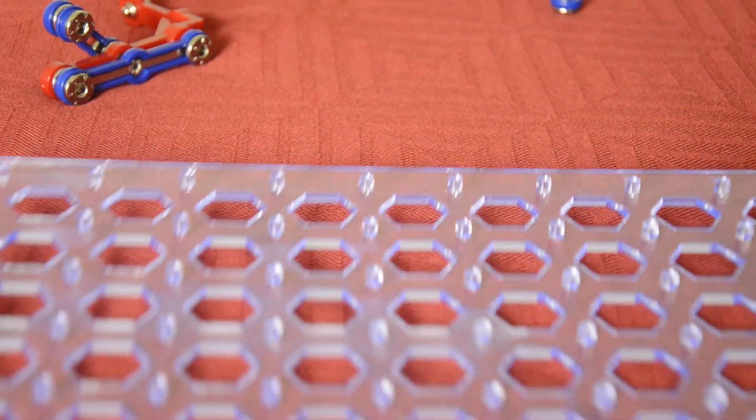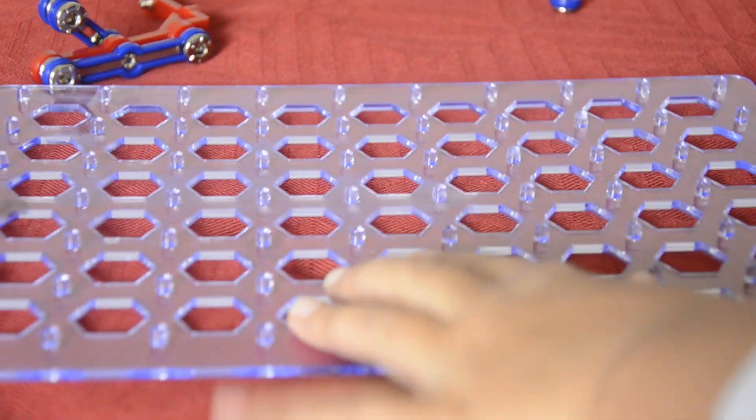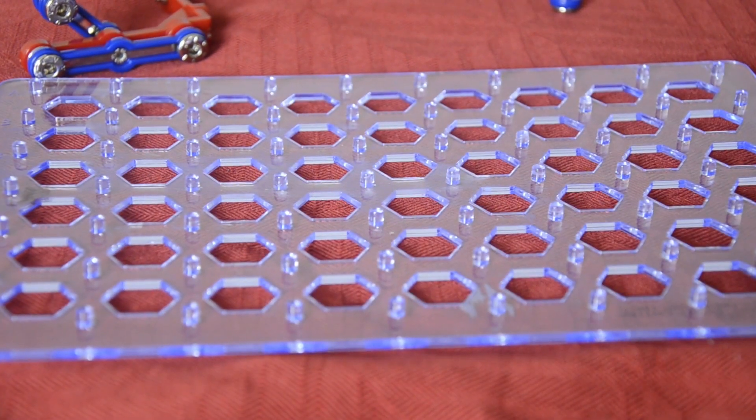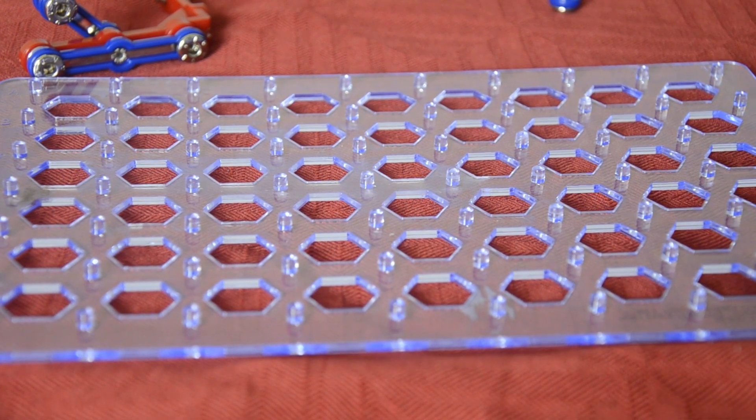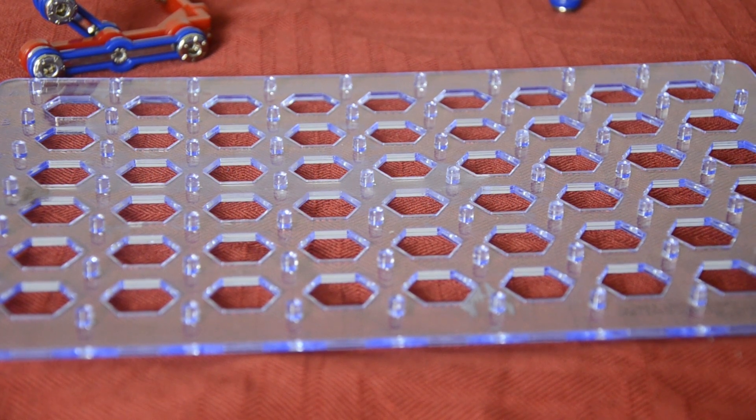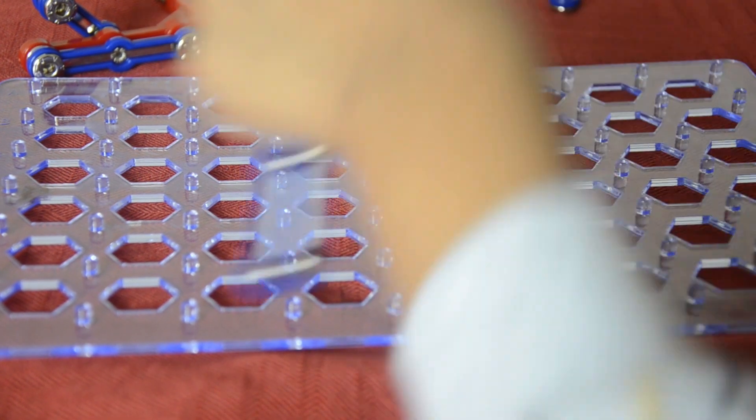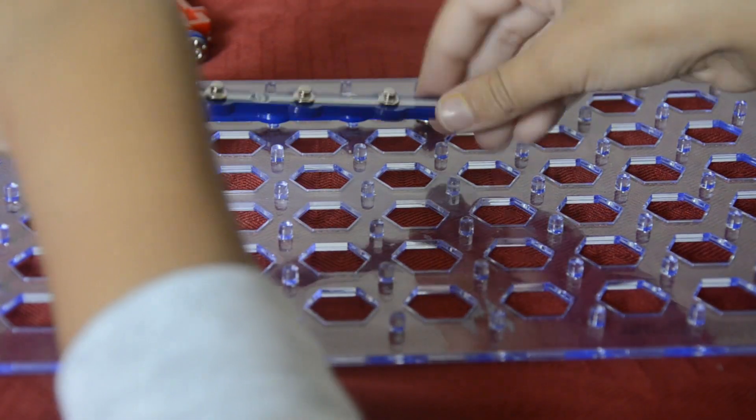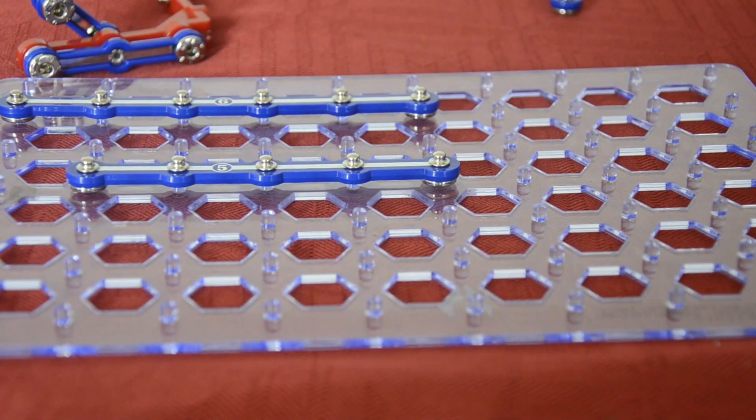First you're gonna get the board and place it there. Once you place it there, you're gonna get a six and place it there. Then you're gonna get a five and place it there.